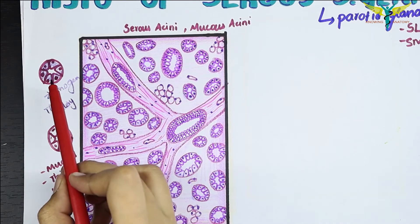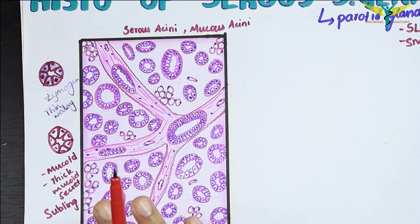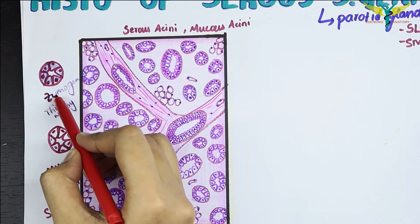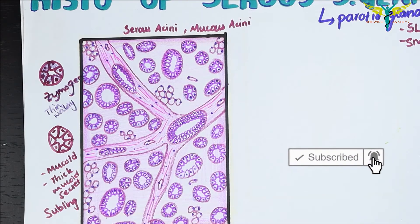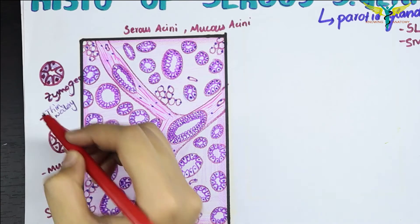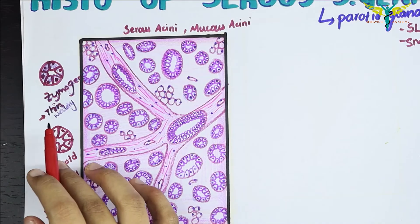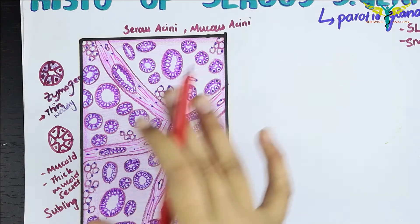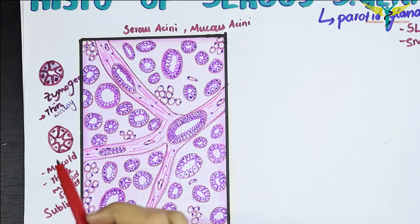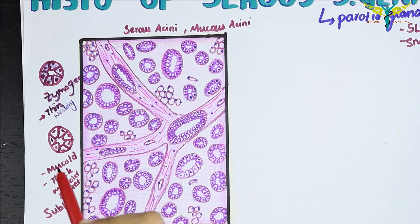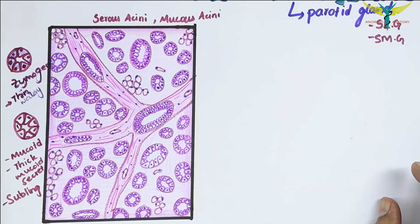To summarize: serous acini are triangular cells with a rounded nucleus at the base, indistinct cell boundaries, containing zymogen granules which cause dark staining in hematoxylin and eosin, and they produce thin watery secretions — the parotid gland is the example. Mucous acini are triangular cells with a flat nucleus at the base, producing thick mucoid secretion — the sublingual gland is the example.